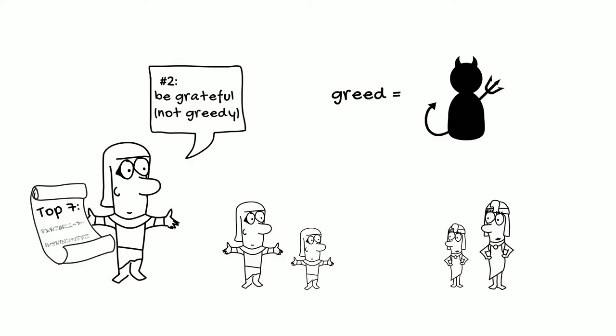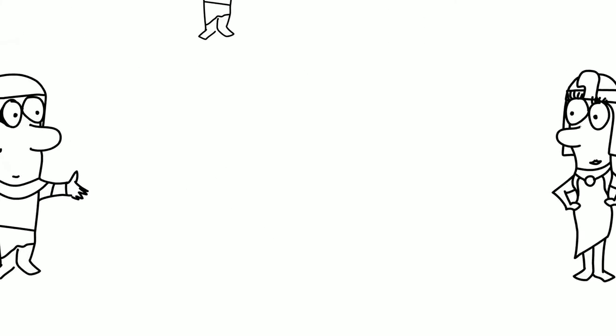Ptahhotep is saying that greed should not only be avoided for moral reasons, but also because it tears apart families and makes people hateful. Instead, we should appreciate what we have, and as he said earlier, follow our hearts.